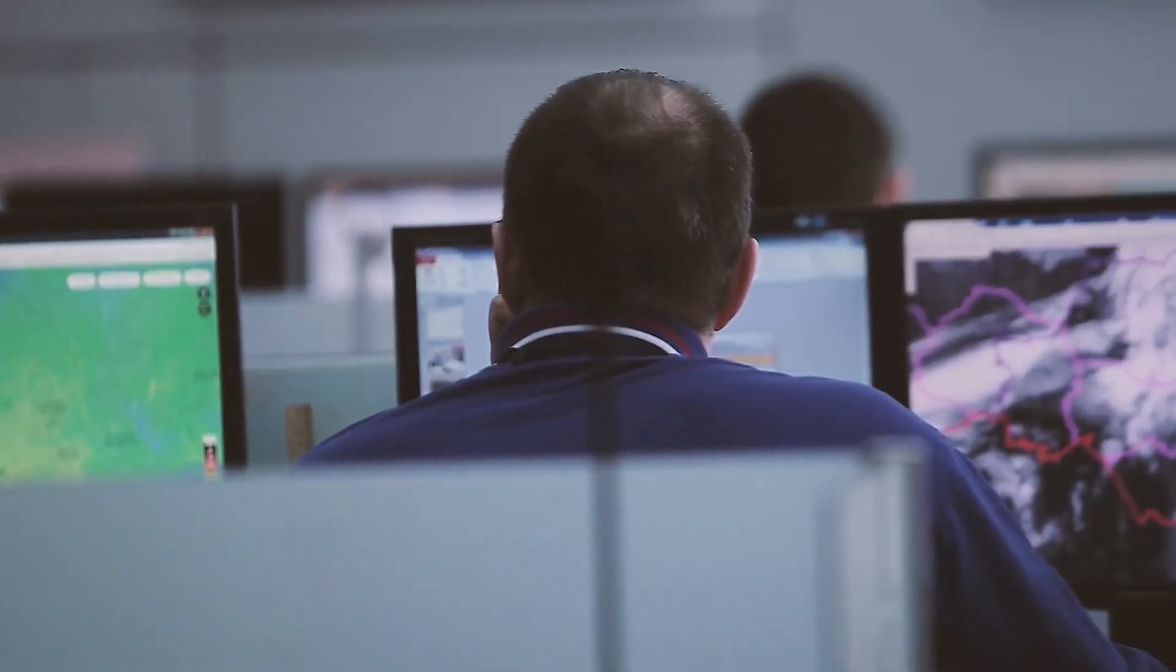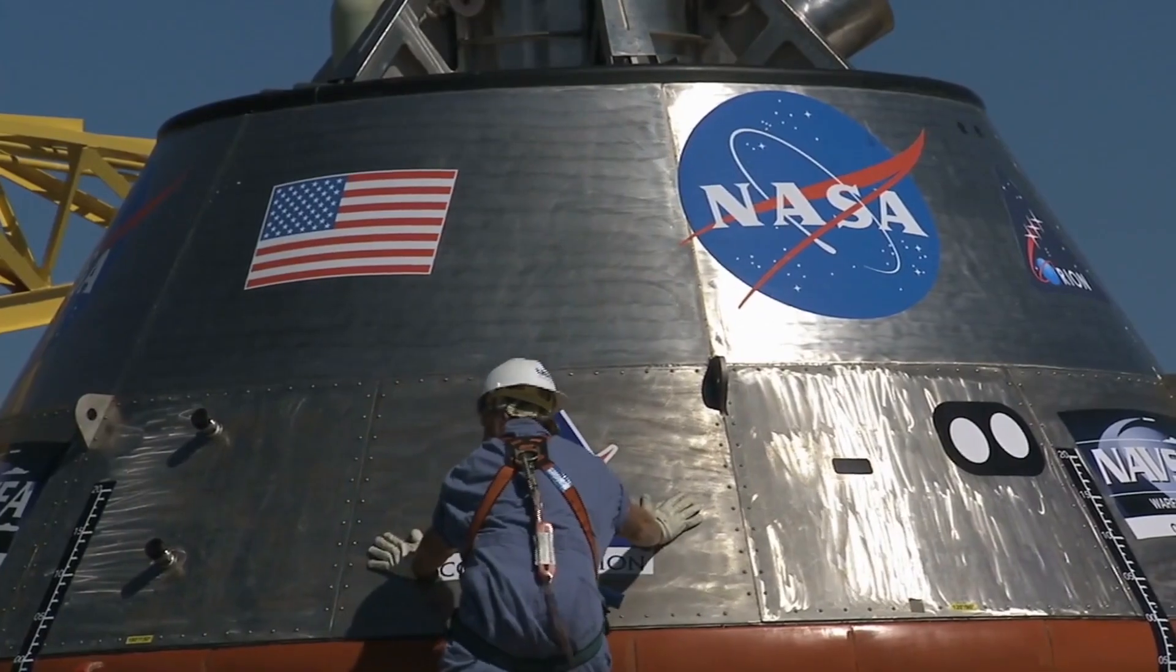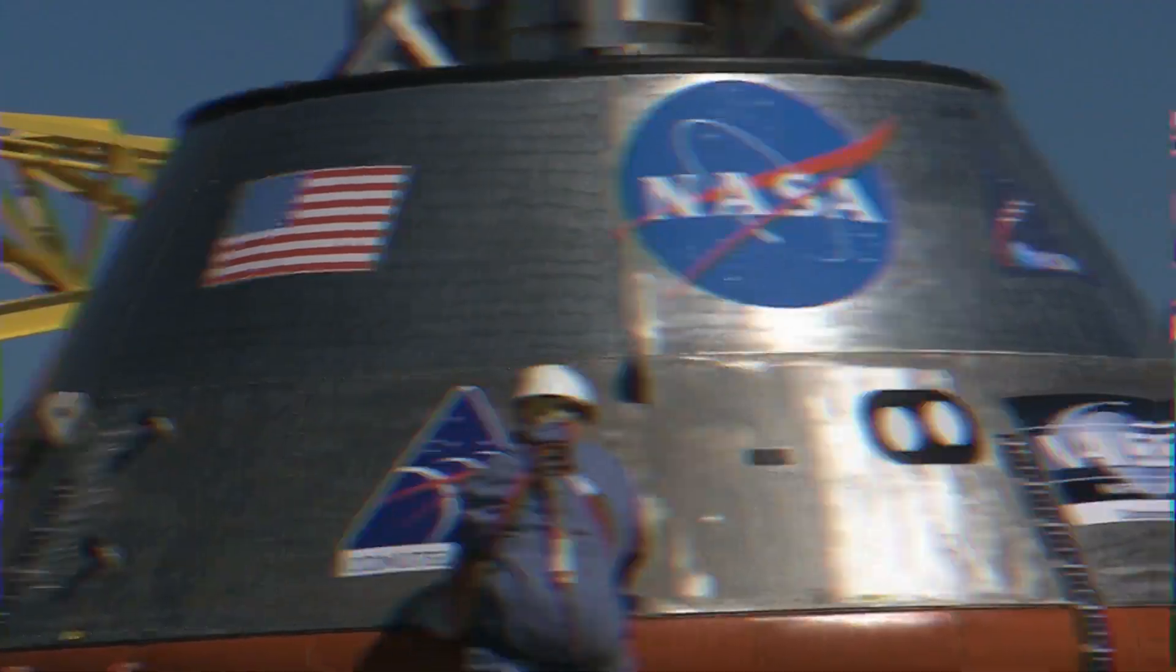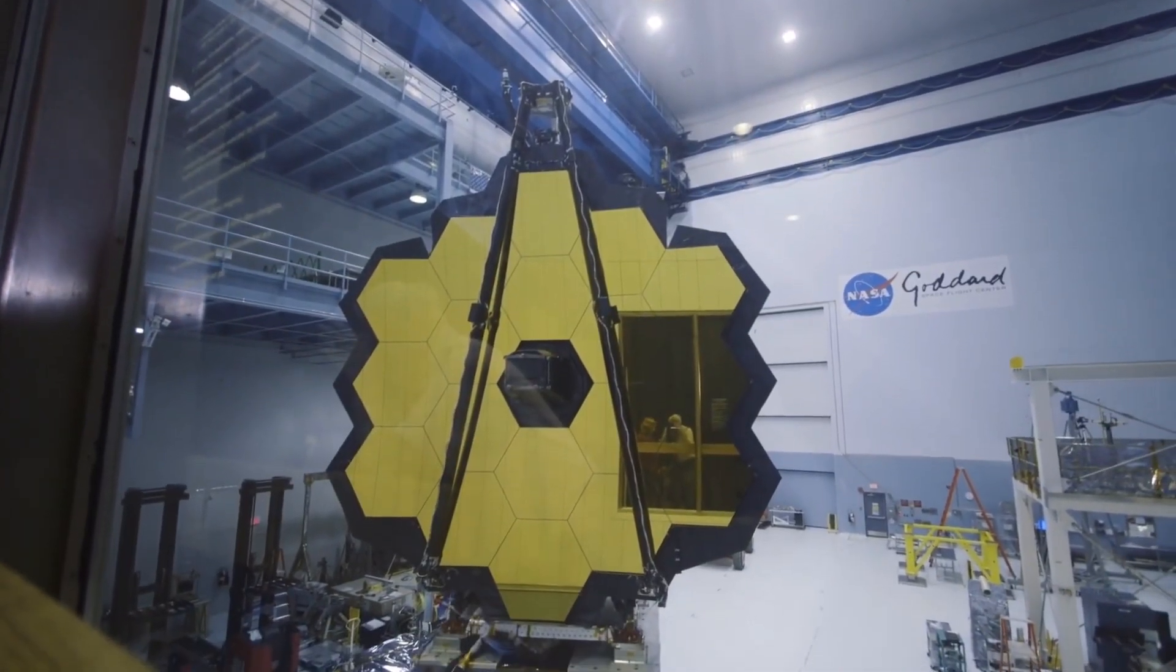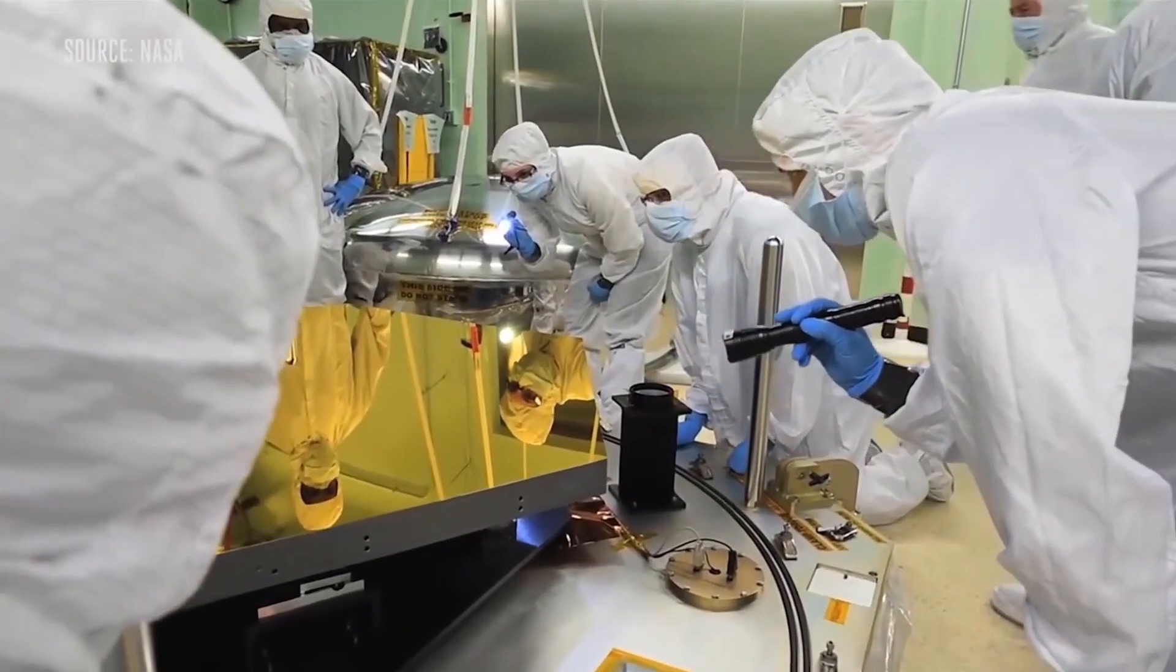The JWST is currently undergoing a series of science and calibration tests. On June 17, NASA announced that Webb was about halfway through its instrument checks. As of today, seven out of Webb's 17 instrument modes are ready for science, according to the statement.